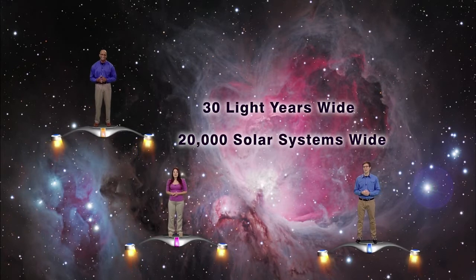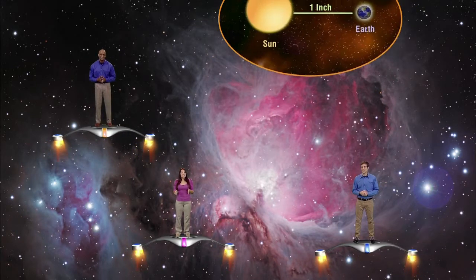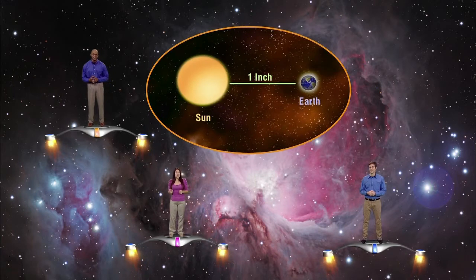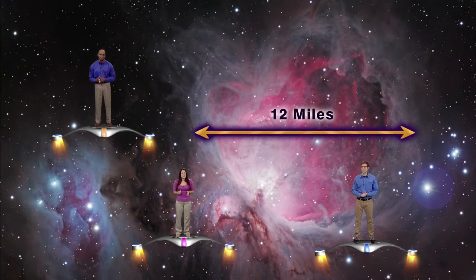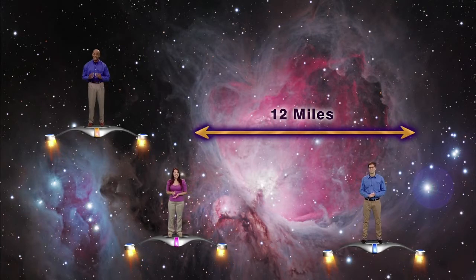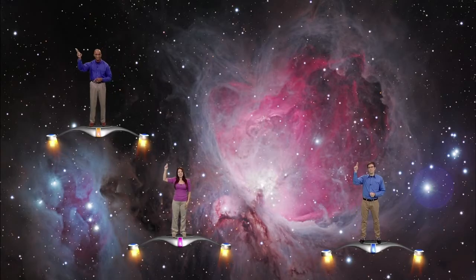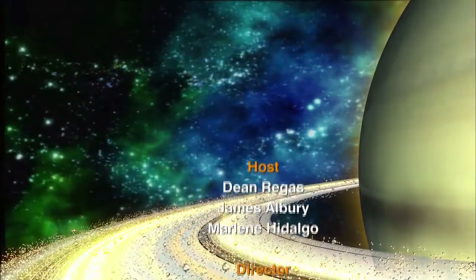Or to put it yet another way, if the distance from our Earth to the sun were one inch, the distance across the Orion Nebula would be over 12 miles. Is that mind-boggling or what? So, get outside and enjoy the Great Orion Nebula as you Keep Looking Up!